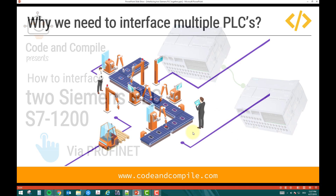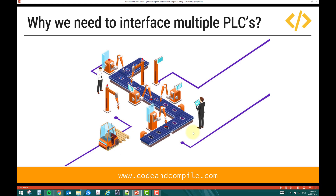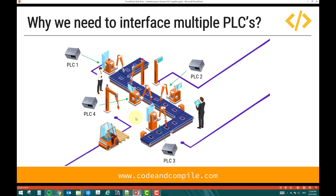First of all, we have to understand why we need to interface multiple PLCs. Let's imagine we have an assembly line, and in an assembly line we have different operations. For example, there are several robots doing one or another operation. These robots are generally controlled by a PLC. The robots have their own controller, but to send the signal from sensors on the conveyor and other interfaces, we need a PLC.